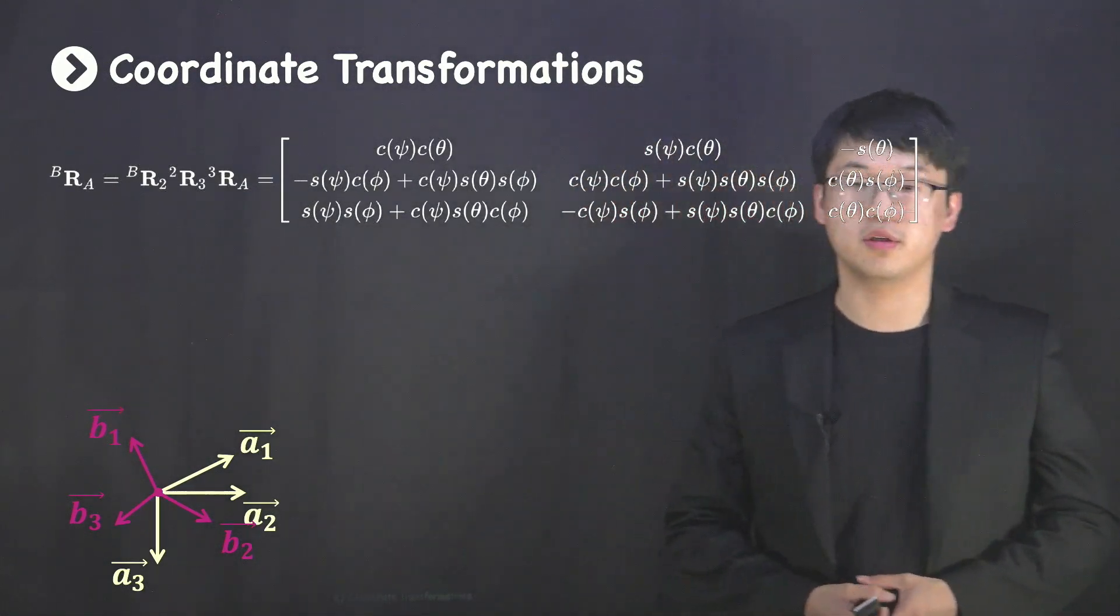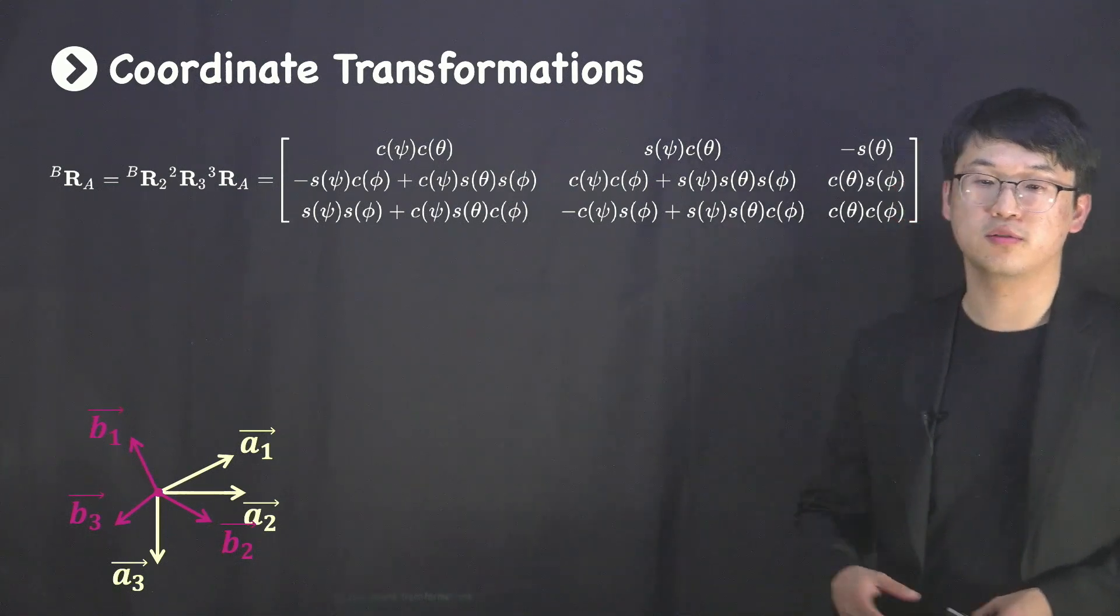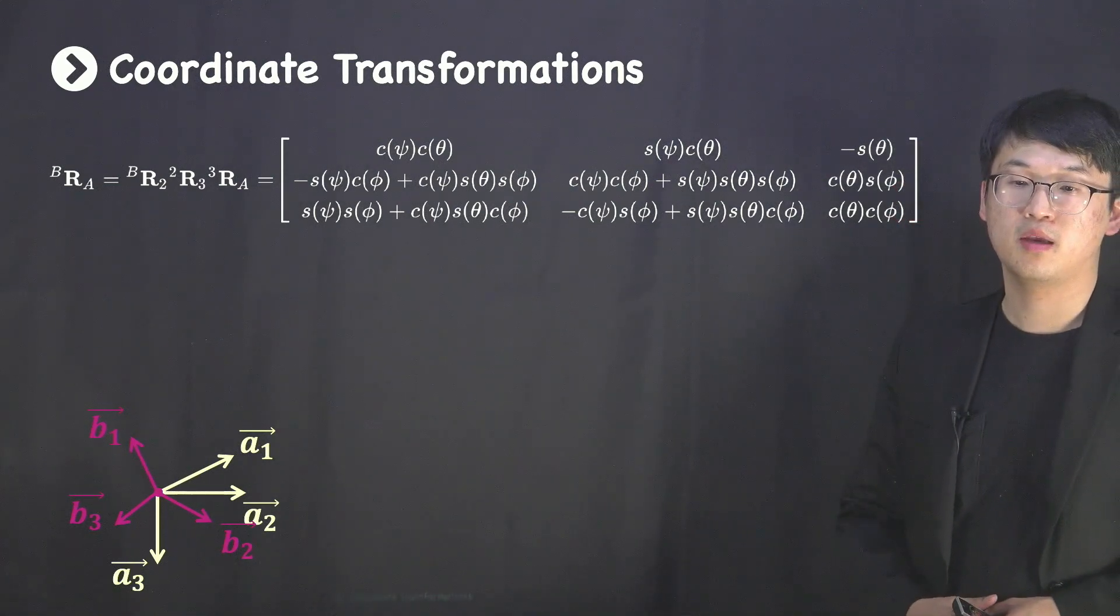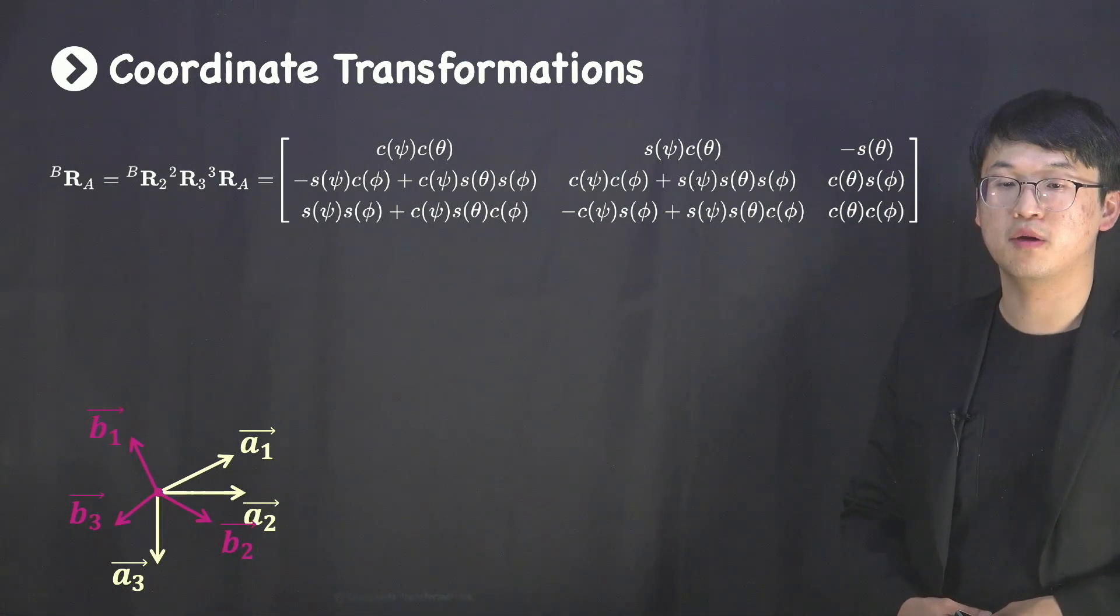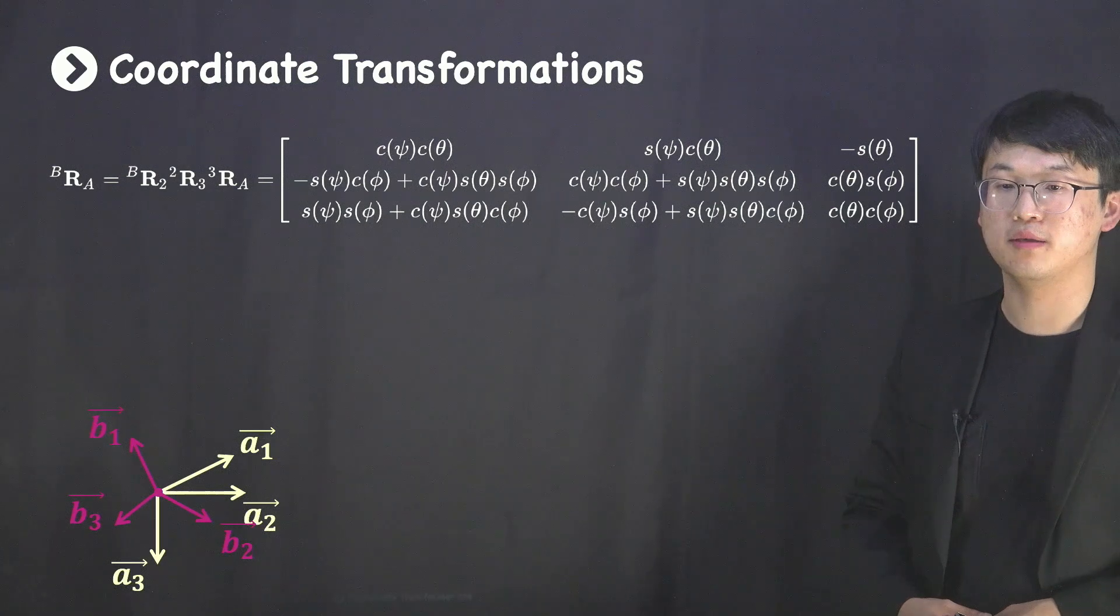Rearranging all matrices into a single transformation matrix looks like the above, which will express any vectors in an inertial reference frame A to be measured from a body fixed frame B.